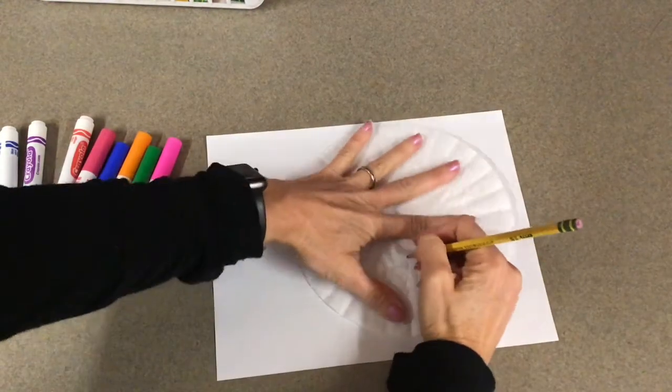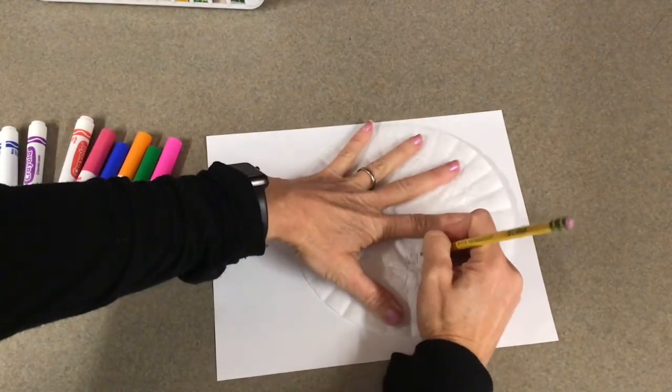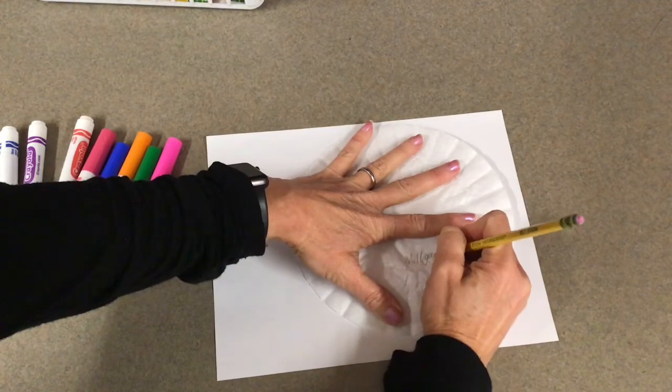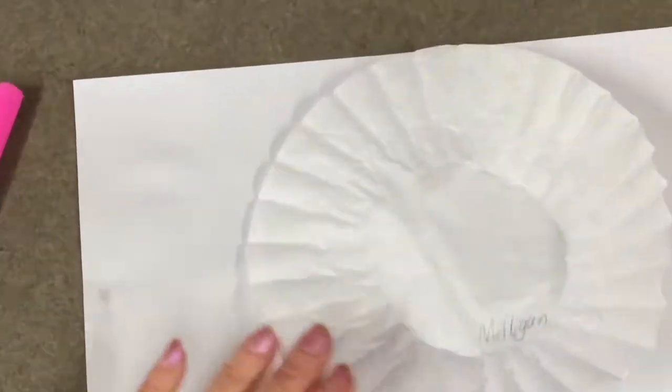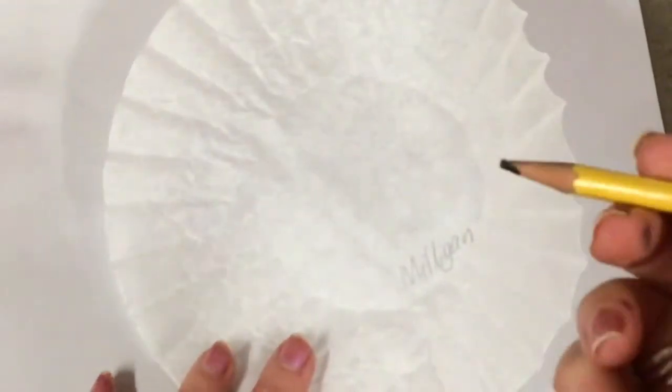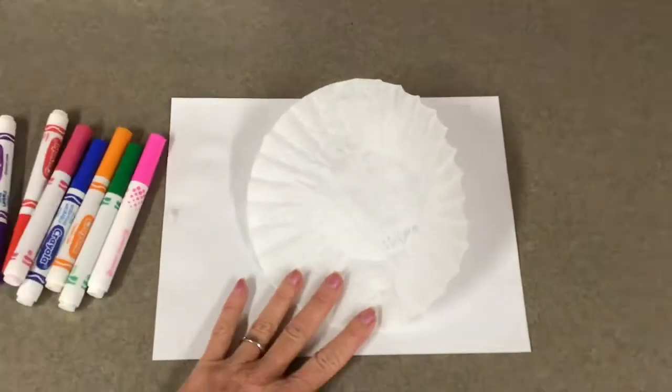Okay artists, get your pencil and very gently write your name in the center of the coffee filter. Check your shoulder buddy. So there's my name in the center with a pencil. Do not use anything but a pencil.